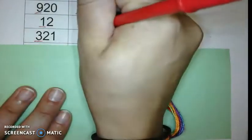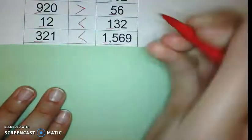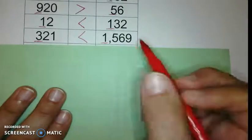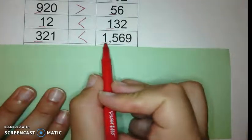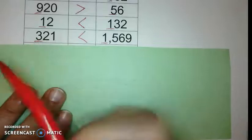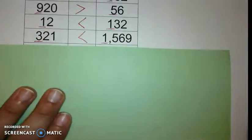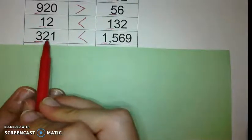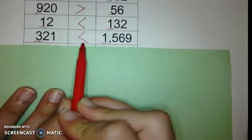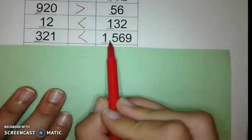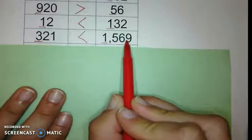If he's really hungry, he's going to eat the larger number, which is the thousands. Now try and read it with me. 321 is less than 1569.